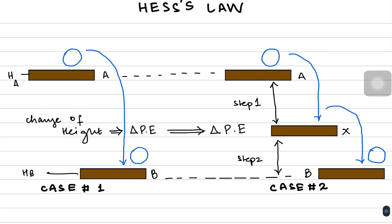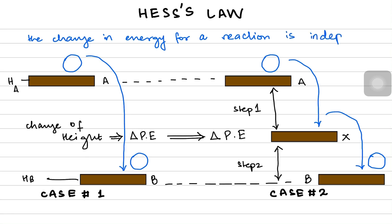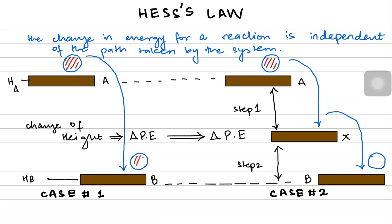Using this concept we are going to talk about Hess's Law. Hess's Law states that the change in energy — or enthalpy — for a reaction is independent of the path taken by the system. It really doesn't matter what path the system takes; all that matters is that the same reactants and products are present.